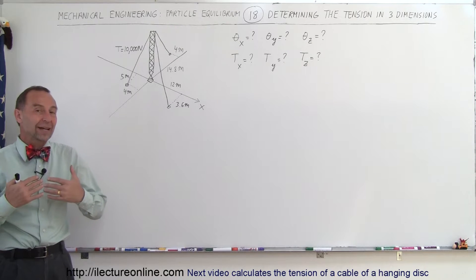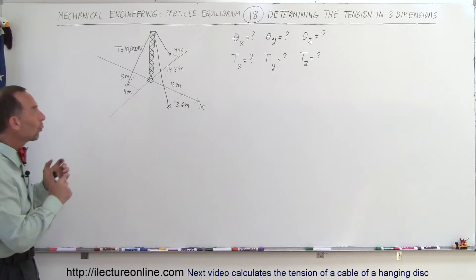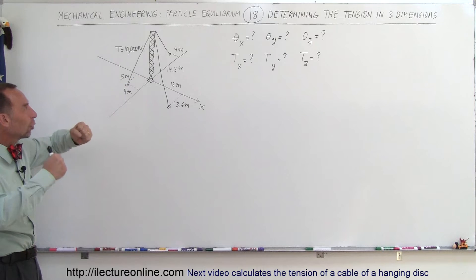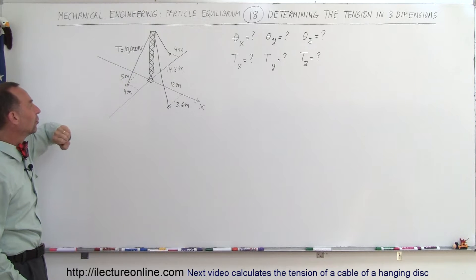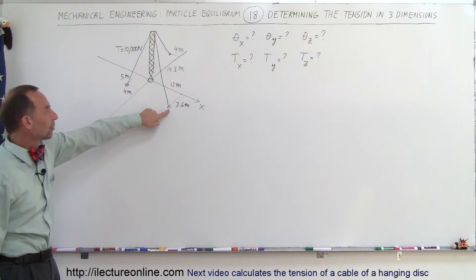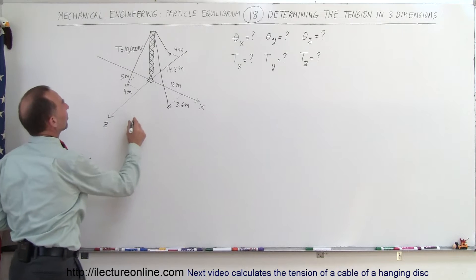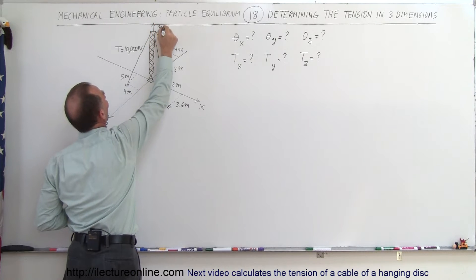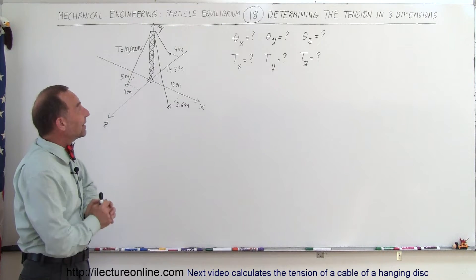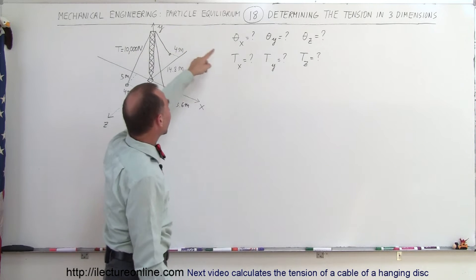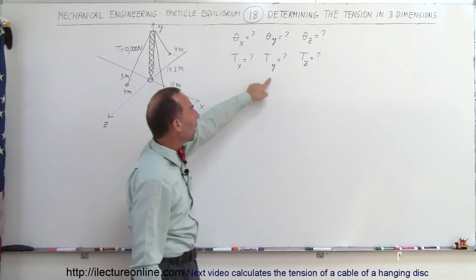Welcome to ElectronLine. Now that we're able to find angles in three dimensions, let's apply that to find the angles and the tension on one of the guidelines of an antenna. There are three lines holding this antenna upright, and the tension in this wire is 10,000 newtons. We want to find the angle between this line and the x-axis, the y-axis, the z-axis, and also the x, y, and z components of the tension.